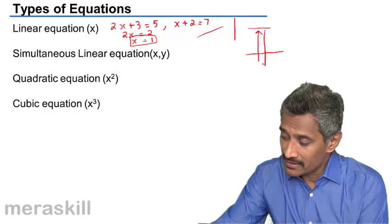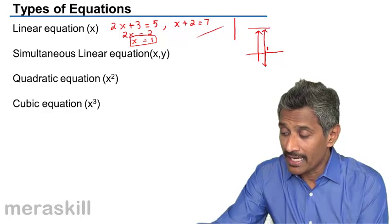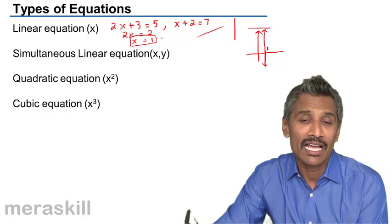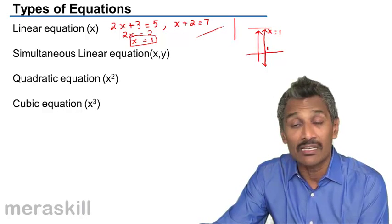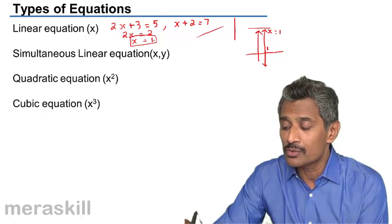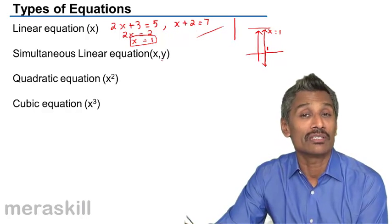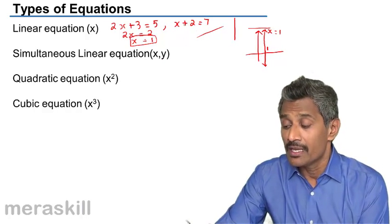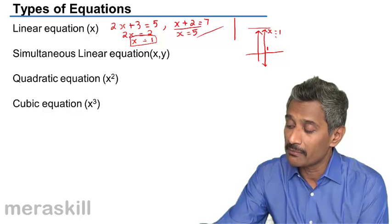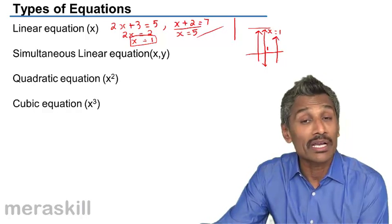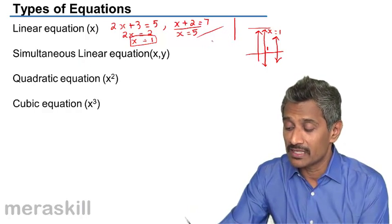This gives a line parallel to the y-axis where every point has x-coordinate 1, so we call this line x equals 1. It is a straight line. Similarly, x plus 2 equals 7 gives x equals 5, which is a line passing through 5 parallel to the y-axis.